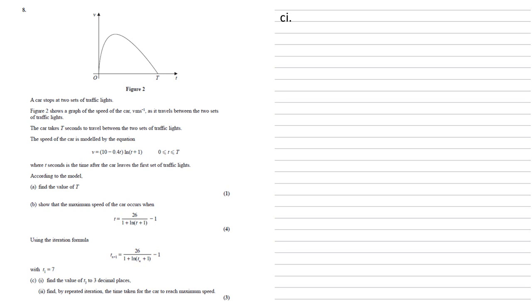We now want to use the iteration formula t n plus 1 is equal to 26 over 1 plus ln t n plus 1 minus 1 with t 1 equals 7. And we're going to use this to find the value of t 3 to three decimal places. So we start off by finding t 2. Remember that when we've got our n plus 1 and our n there, this means that the number with the t on the left is always one higher than the t that's on the right hand side of our equation. So we're told that t 1 is equal to 7. So we're going to substitute that into the right hand side.